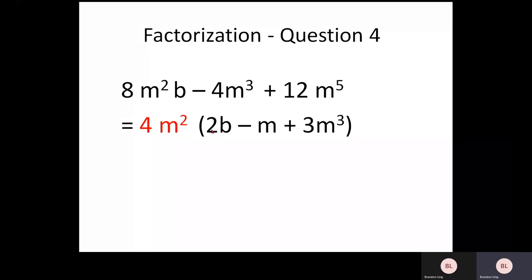So essentially, you can pull out 4M squared out. And inside the bracket, you can actually write down 2B minus M plus 3M to the power of Q.